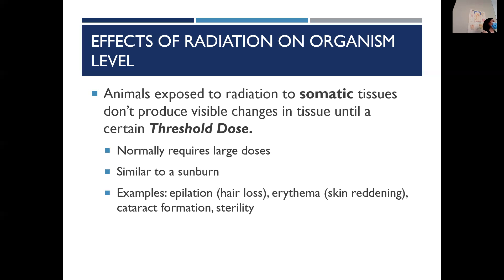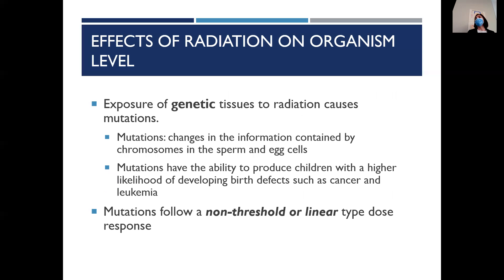Examples of threshold effects include patients losing their hair — a smaller dose might not do it, but once they reach a certain point, that's when follicle damage happens. Other examples are skin reddening or cataract formation if radiation is close to the eyes. A threshold dose has to be hit before those negative effects appear. When talking about genetic tissue, however, there is not the luxury of getting a certain amount of radiation before damage occurs — it's linear. The amount of damage goes up with the amount of radiation you get, so they go up together. It's linear.